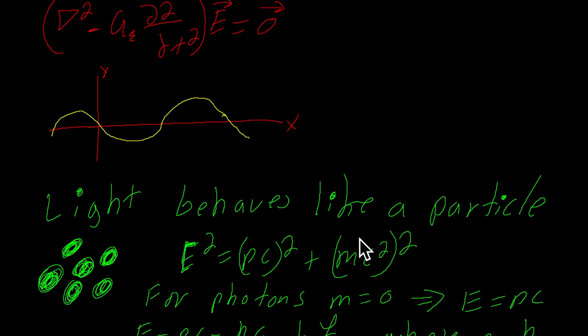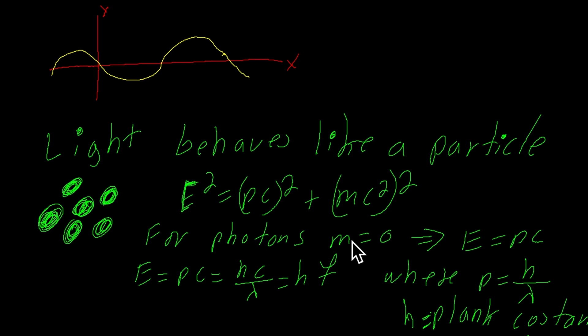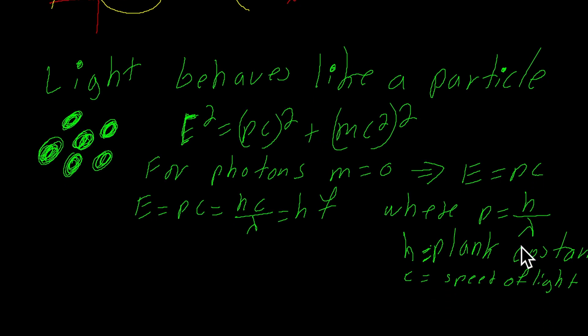Light also behaves like a particle. This comes from the work of Einstein. Probably all of us are familiar with the equation E equals MC squared. Well, that is not the whole picture. The whole picture is this equation right here. When M is equal to 0, which is the case for a photon, energy equals PC, P being the momentum of the particle. Energy can be expressed as H times F, F is the frequency. This is because P, the momentum, is equal to H, Planck's constant, over lambda, the wavelength of light.